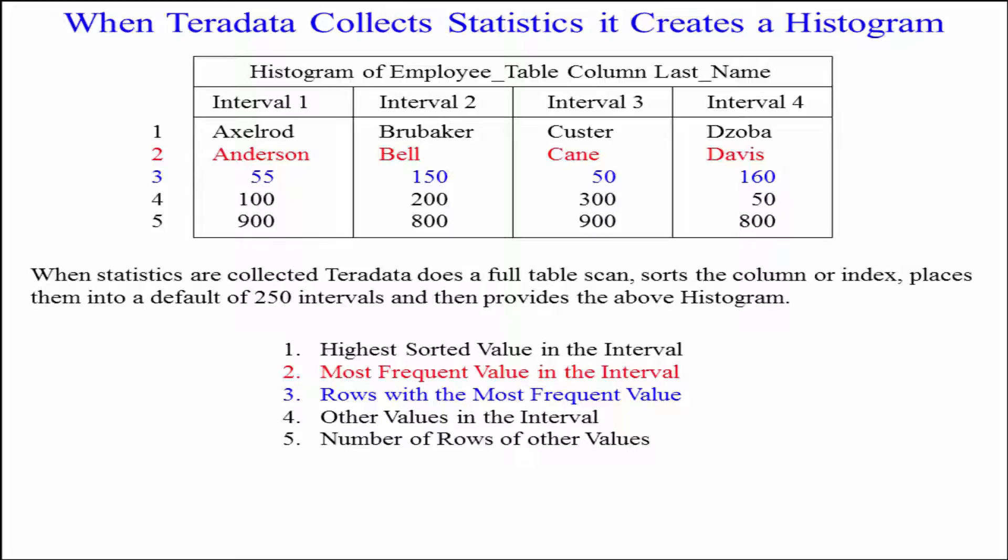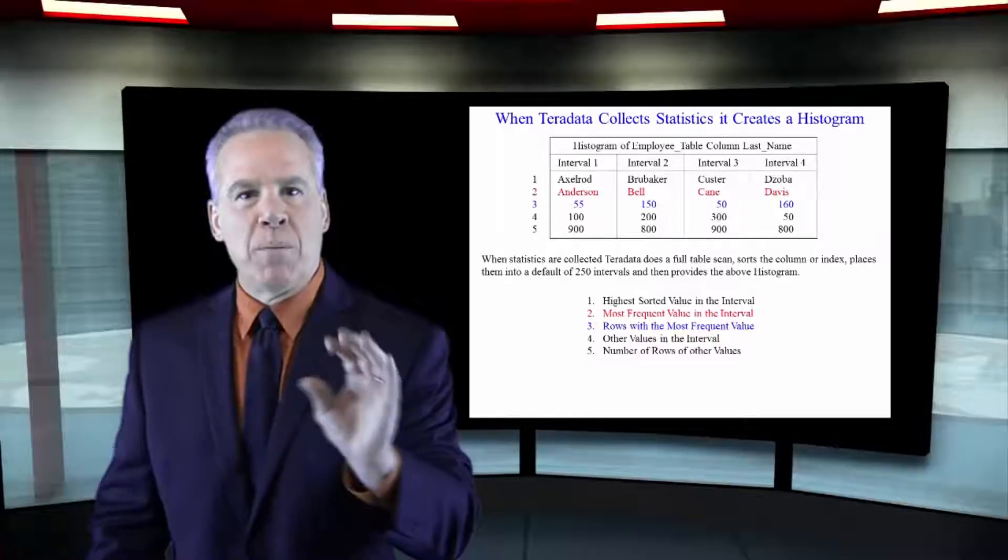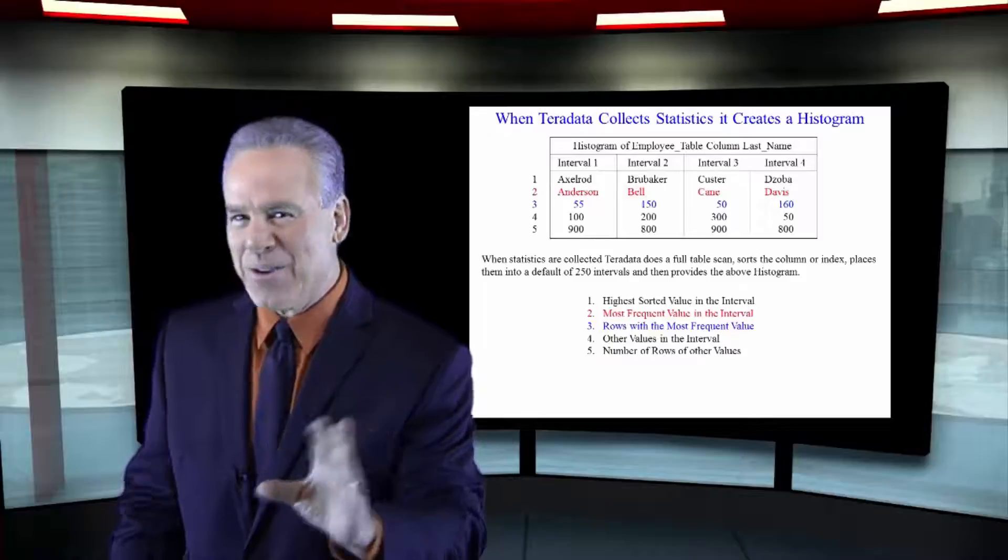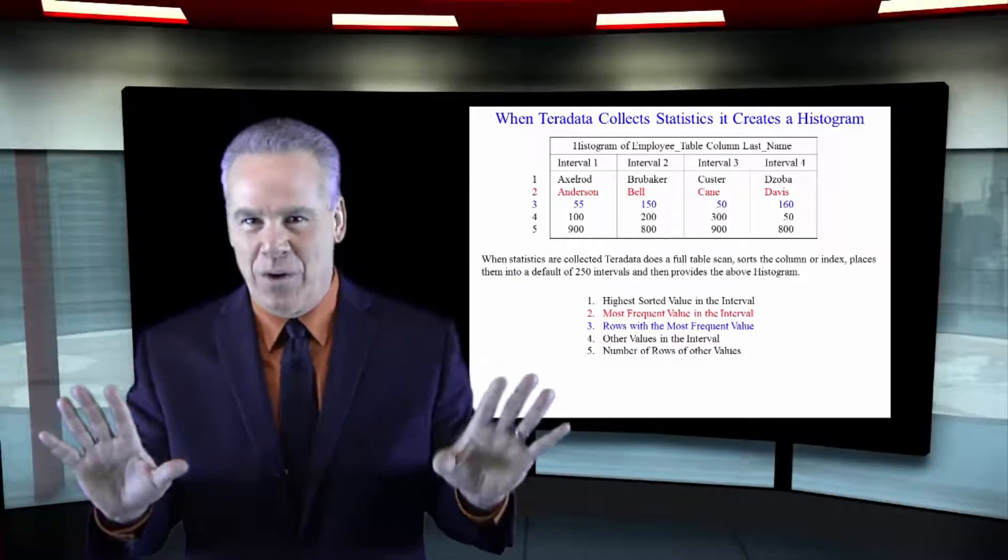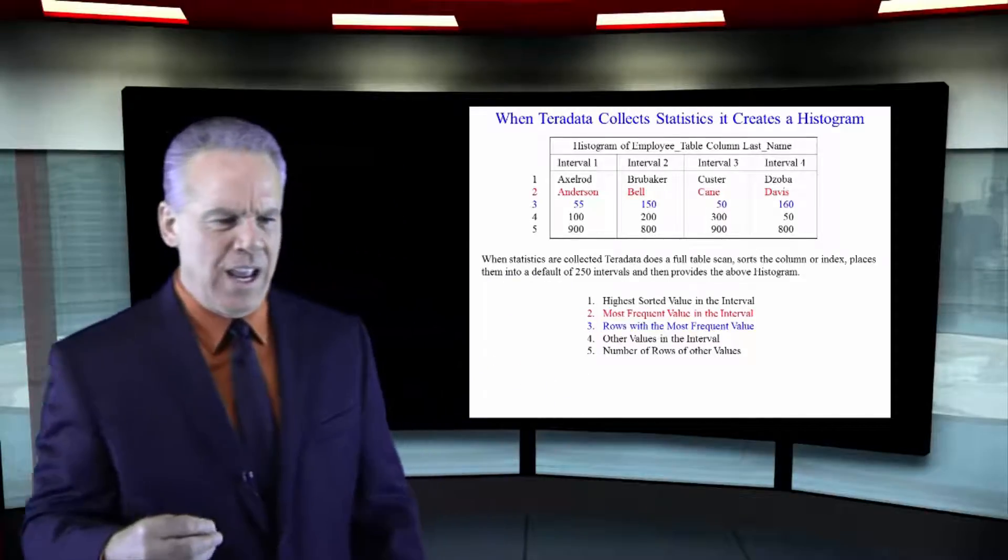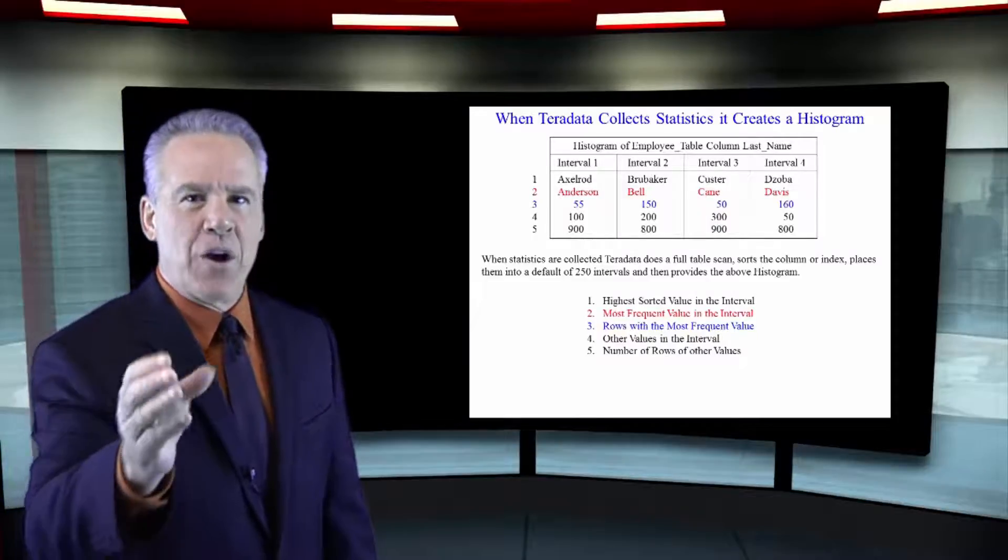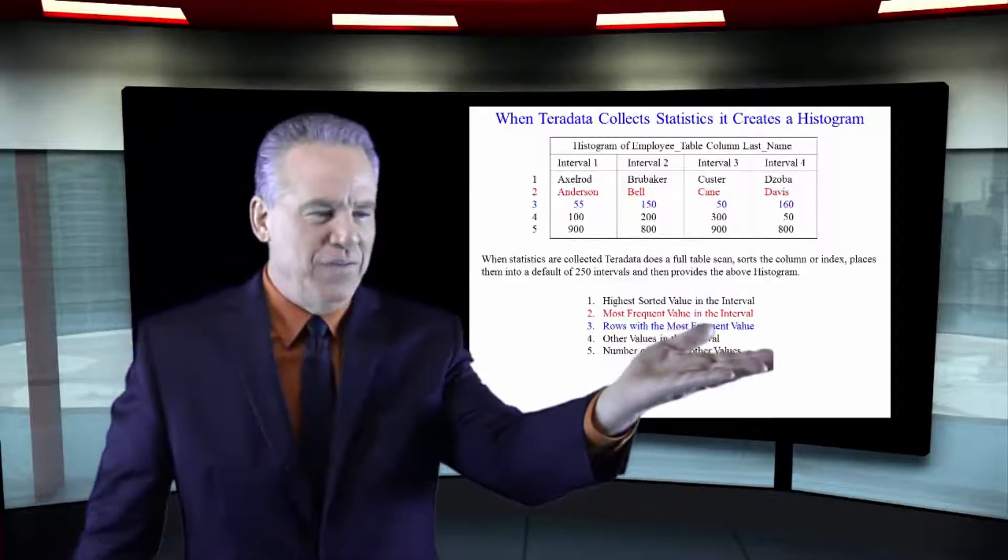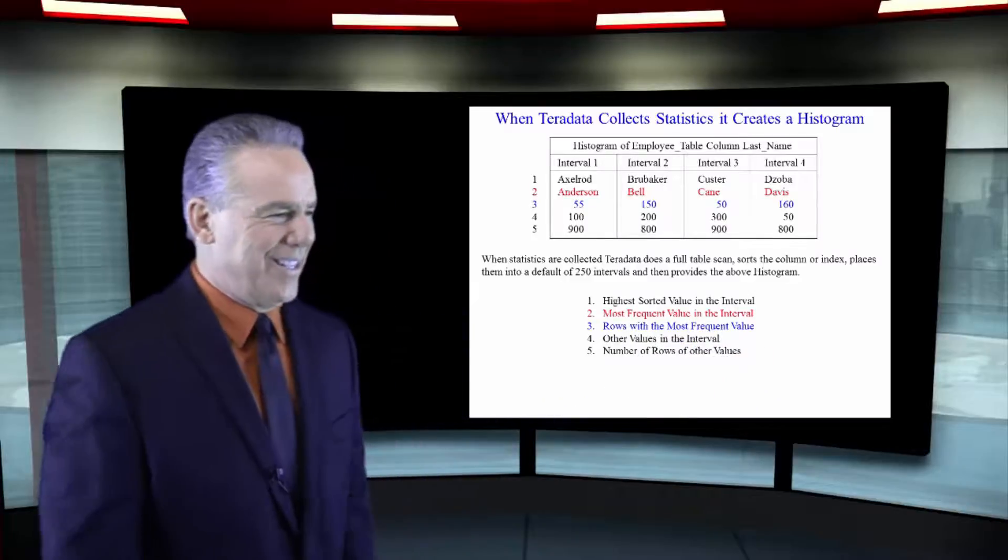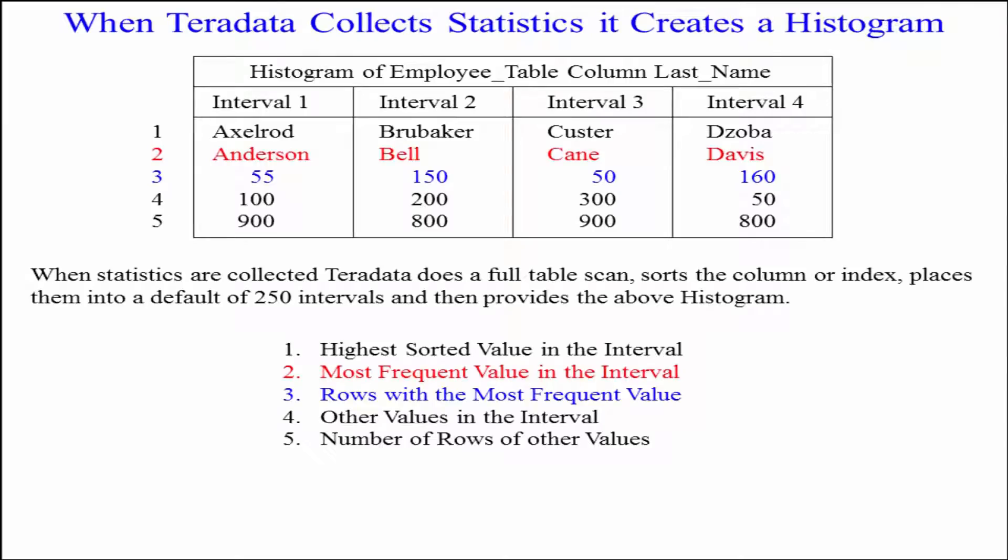We can see that Anderson's the second thing. That's the most frequent value in the entire interval. If somebody said, tell me about the name Abraham, is there more than 55? Impossible, because there's 55 Andersons. Rows with the most frequent value of Anderson, 55 of them. 55 Andersons are out there. We know that for sure.